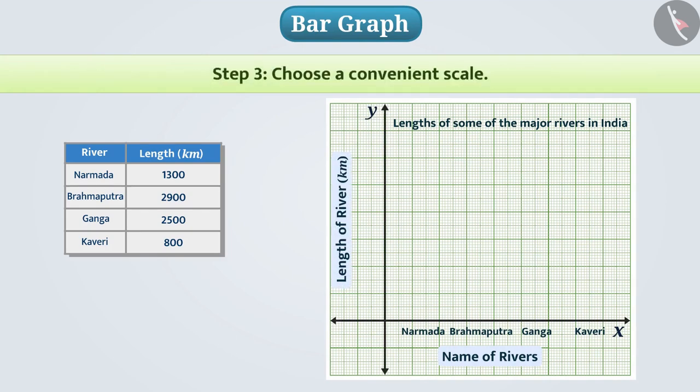Now, we will choose a convenient scale. Can you tell which convenient scale shall be taken to show the length of the river? Let me tell you, the longest length here is 2900 km and the shortest length is 800 km. In order to represent both correctly, we can take a convenient scale in this way. We can take 1 unit is equal to 500 km. The number will show numbers on the Y axis according to the scale.